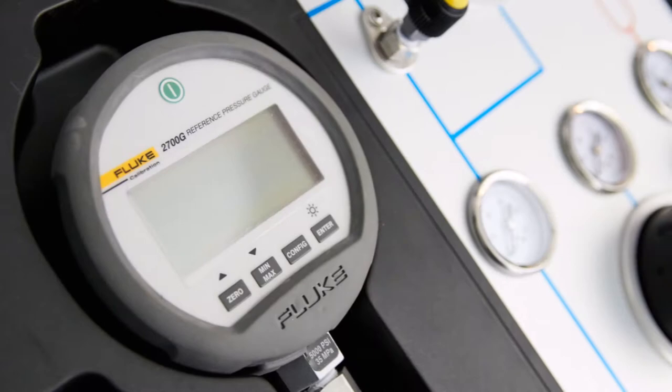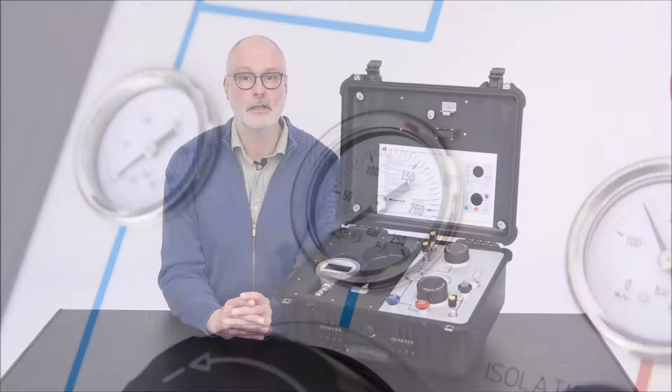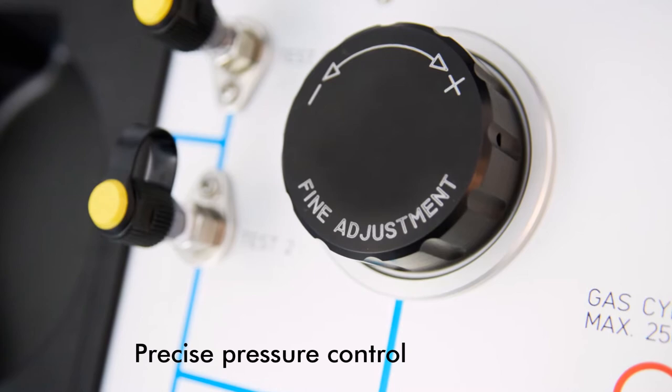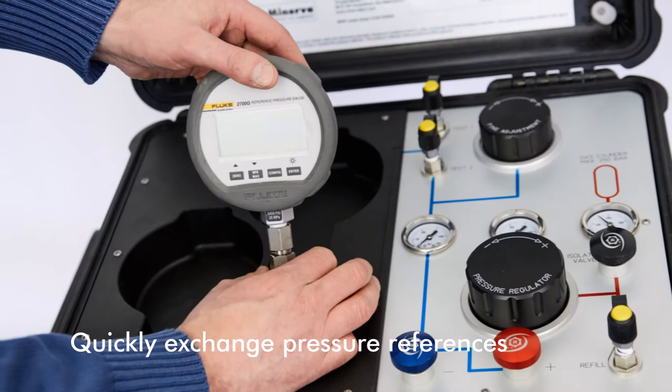This enables you to perform safe pneumatic calibrations up to a maximum pressure of 250 bar, not contaminate the device on test with oil or water, perform precise test pressure control using a pressure balanced volume adjuster, eliminate trouble with trapped air in a hydraulic system, and exchange pressure references quick and easy.